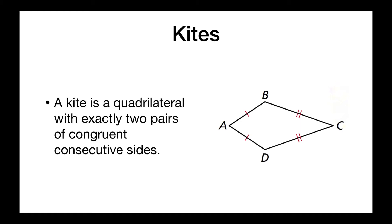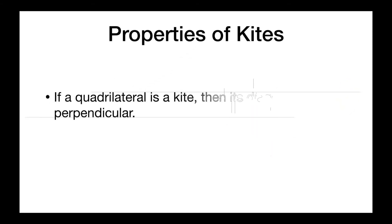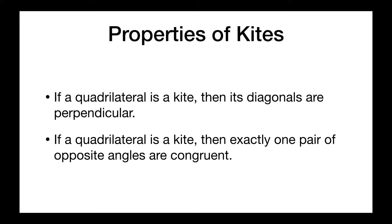Let's look at some properties of a kite. First, if a quadrilateral is a kite, then its diagonals are going to be perpendicular. Think back to the traditional kite — the sticks placed in the back meet at a 90-degree angle. Next, if a quadrilateral is a kite, then exactly one pair of opposite angles are congruent — only one of the two sets of opposite angles are congruent.